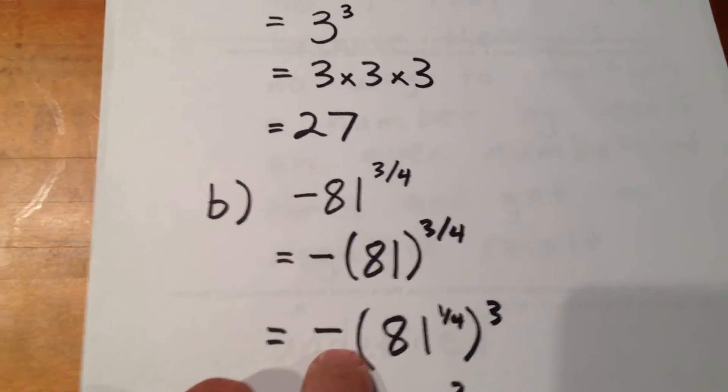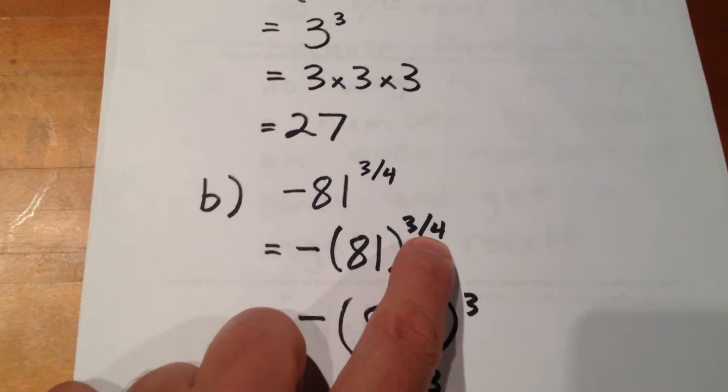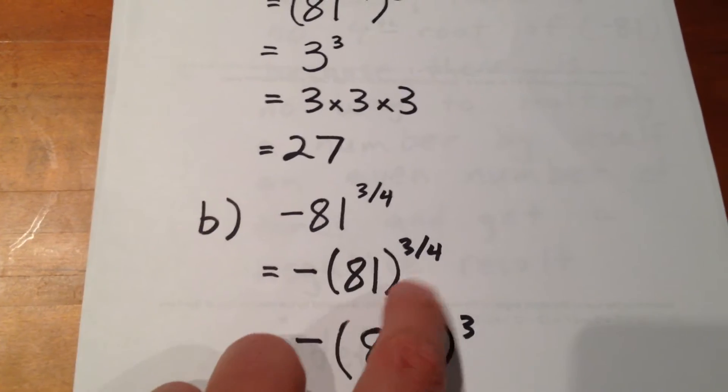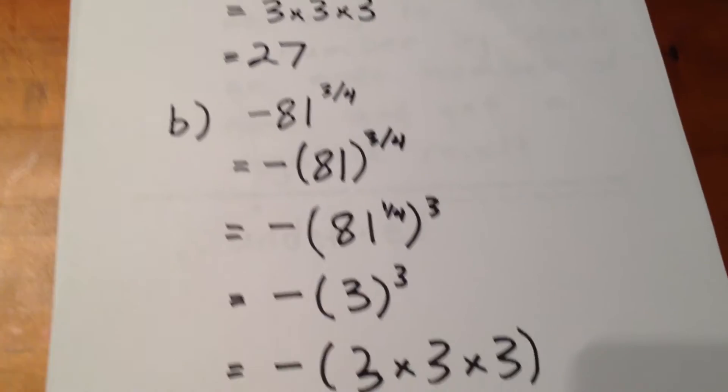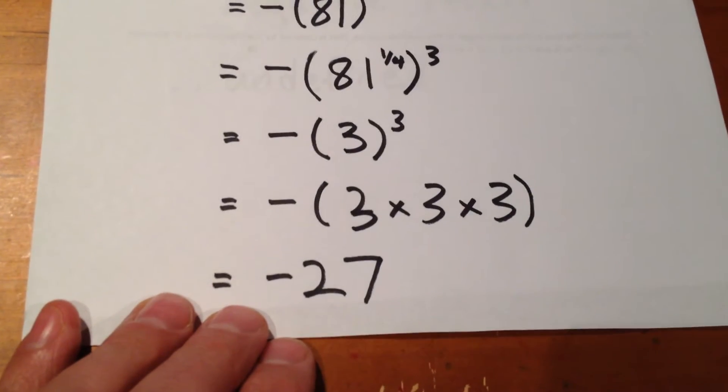So, negative 81 to the 3 quarters is negative 27. And there we go.